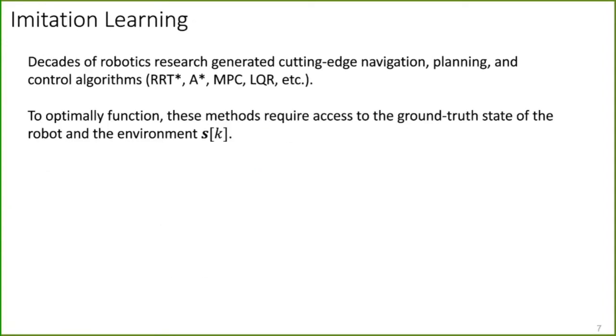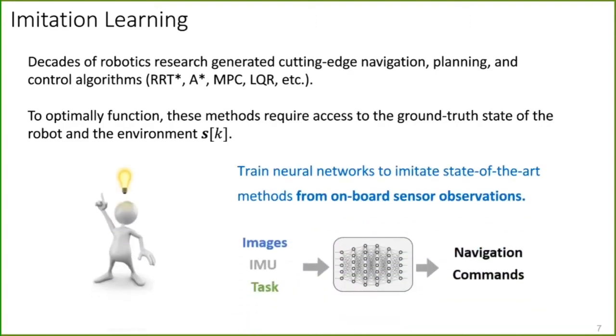We propose to solve this problem using imitation learning. The reason is that we have decades of robotic research that have generated cutting-edge navigation, planning, and control algorithms. Think about RRT star, model predictive control. These algorithms work extremely well. However, to optimally function, these methods require access to the ground truth state s. Of course, they can work with on-board sensor observations, but their performance is significantly lower. So the main idea is to imitate those cutting-edge algorithms, but not from state s, but from on-board sensor observations like images and IMU.